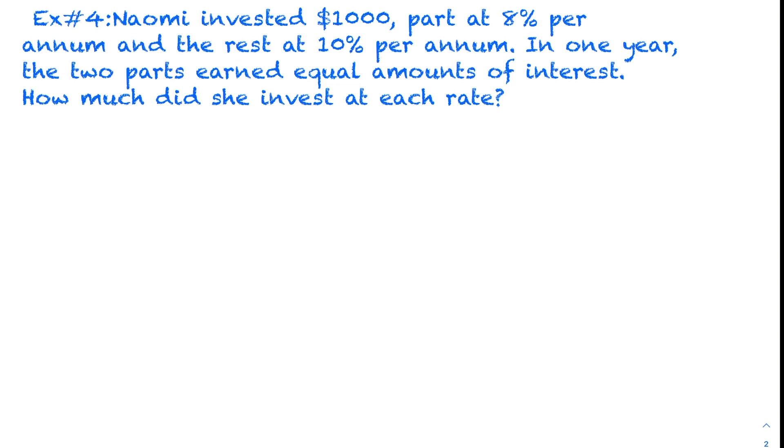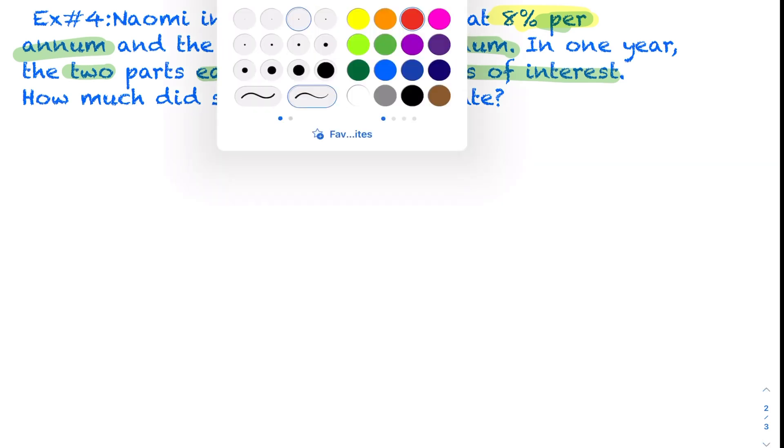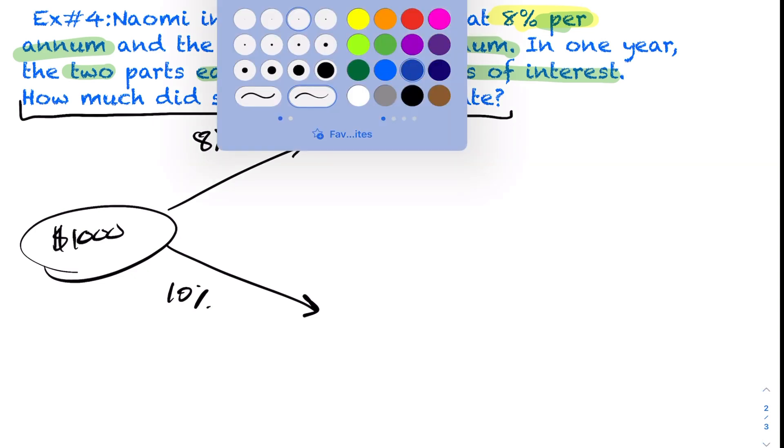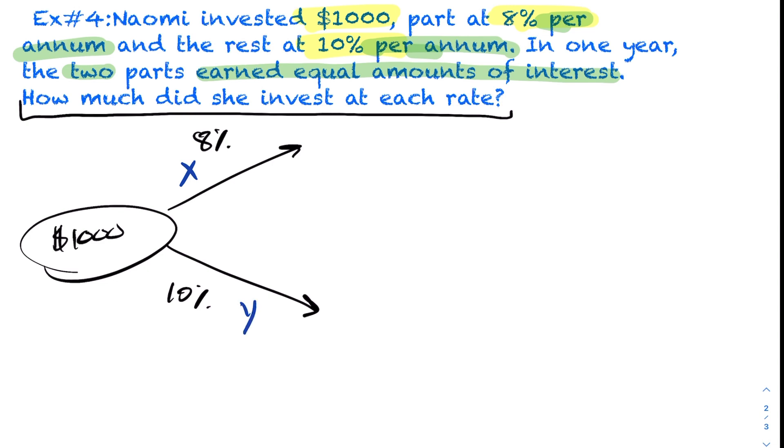We have Naomi invested $1,000. Part of it is invested at 8%, and the rest is invested at 9%. They use the term per annum. This term, per annum, just means per year. So after an entire year of investing, one investment yielded 8% return, the other yielded a 10% return. So now what do we know? We know in one year, the two investments earned equal amounts of interest. How much did she invest at each rate? That's going to tell us the variables to introduce. So visually, Naomi has $1,000. Part is being invested and returns 8%. Another part is being invested, and that return is 10%.